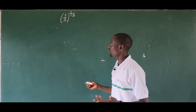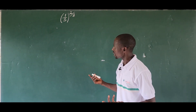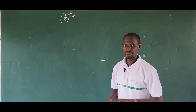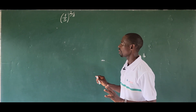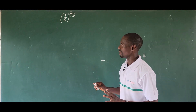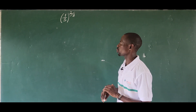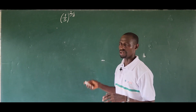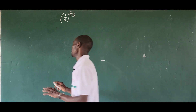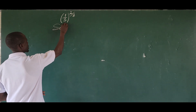Hello, welcome. How do we evaluate this expression without the use of the calculator: one all over three, in bracket, raised to two all over three? So how do we solve this? It's easy. Let's take a solution.